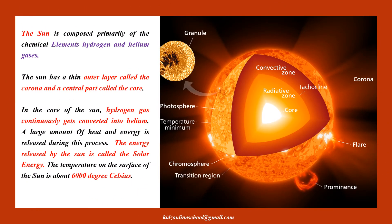The Sun is composed primarily of the chemical elements hydrogen and helium gases. The Sun has a thin outer layer called the corona and a central part called the core. In the core of the Sun, hydrogen gas continuously gets converted into helium. A large amount of heat and energy is released during this process. The energy released by the Sun is called solar energy. The temperature on the surface of the Sun is about 6,000 degrees Celsius.